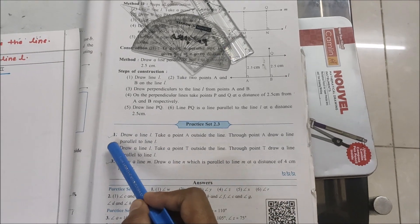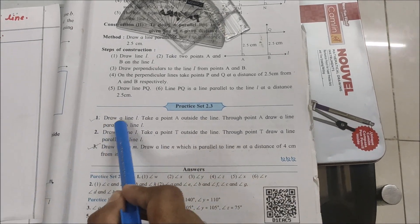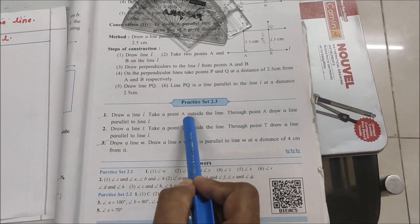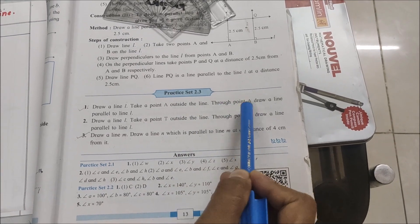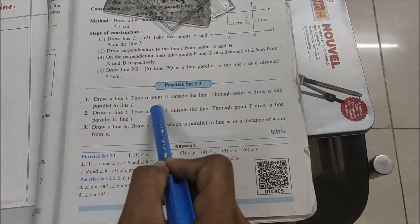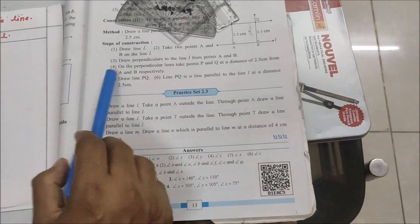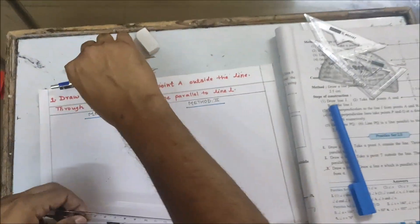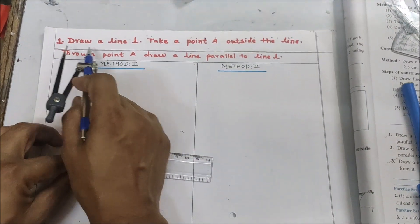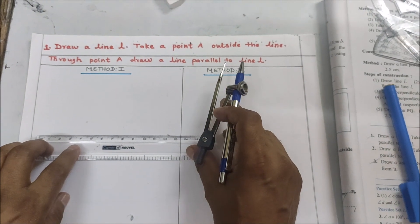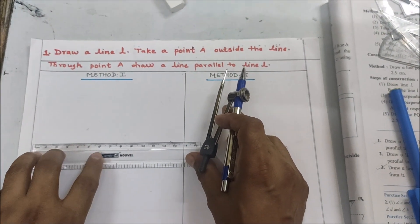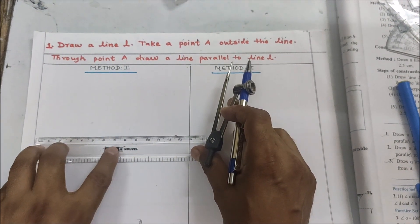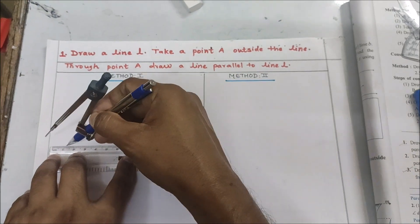Question number one: draw a line l, take a point A outside the line, and through point A draw a line parallel to l. Let's see the construction. First we will make a line with the help of a ruler — you can see here I am making a line.